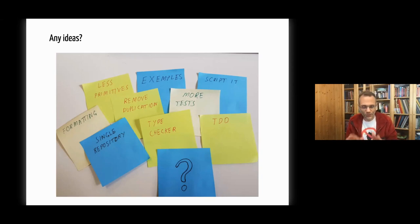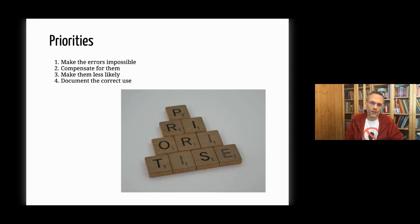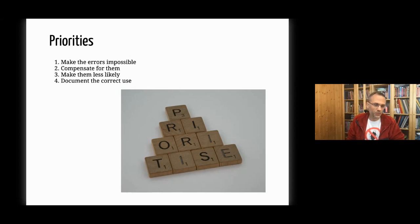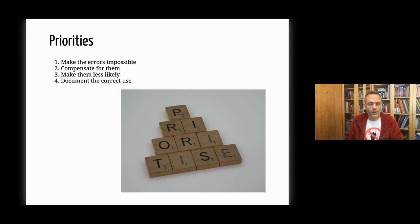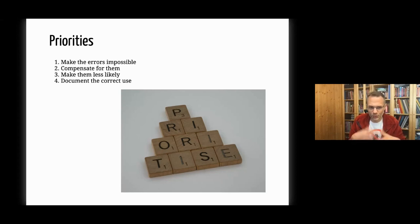Let's go into the code part. There are a few strategies: first, make errors impossible; if we can't, compensate — accept more diverse input and handle errors anyway; if we can't, make them less likely by not inducing the developer into error; and finally, if all else fails, document and hope the developer reads it before introducing the error. Really, documentation can be good but we want to do the other things first.